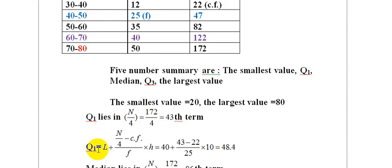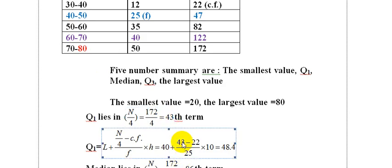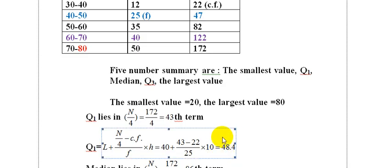The formula is: Q1 equals L plus (N/4 minus CF) divided by F, multiplied by S. So Q1 equals 40 plus (43 minus 42) divided by 25, multiplied by 10. This gives us Q1 equals 48.4.